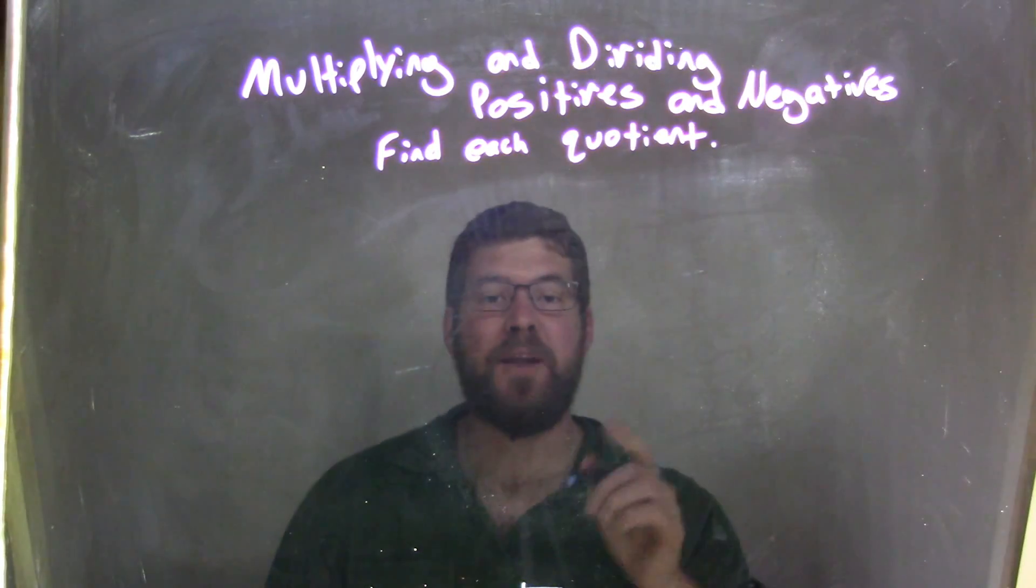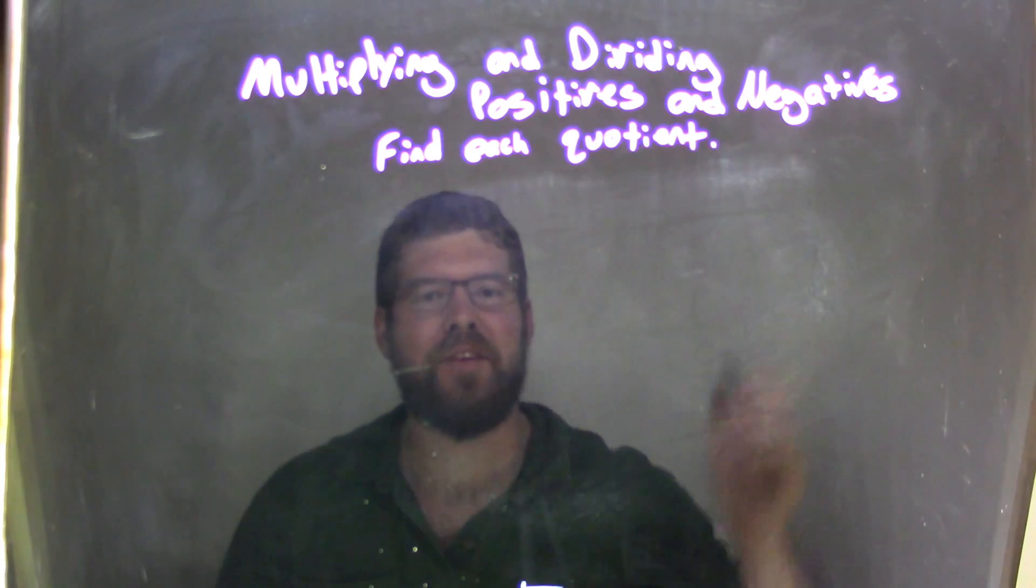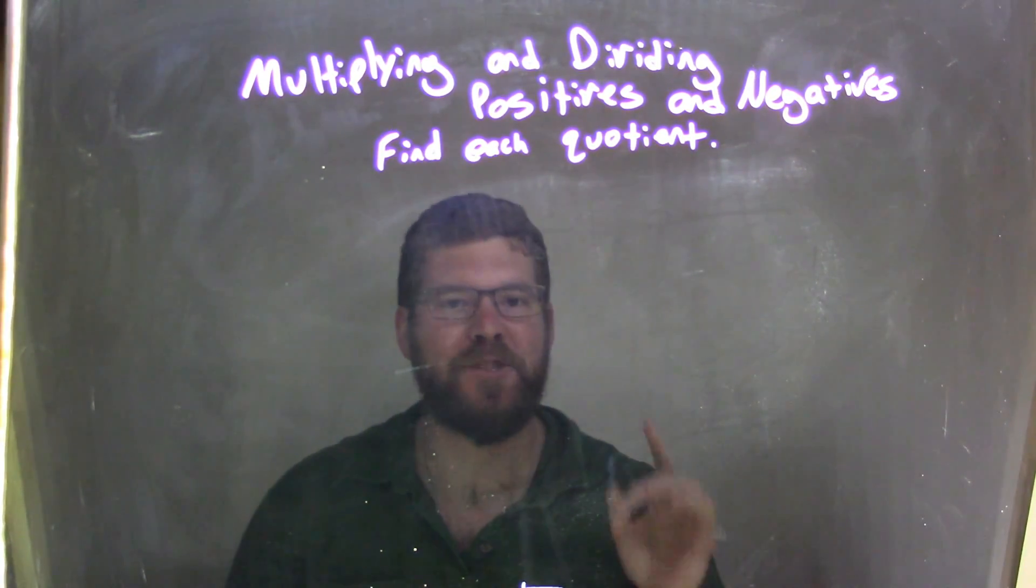Hi, I'm Sean Gannon, and this is Minute Math. Today we're going to learn about multiplying and dividing positive and negatives, and we want to find each quotient.